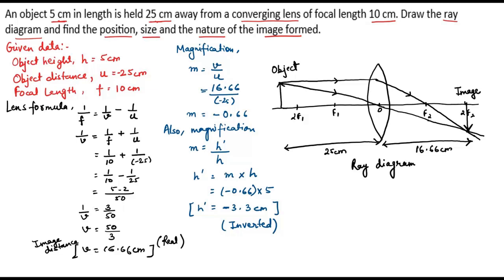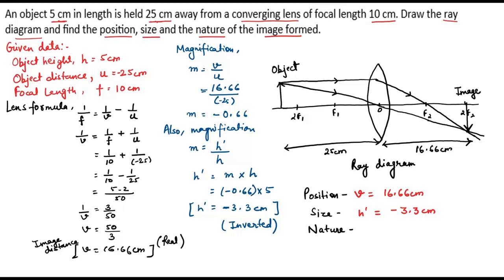This is the ray diagram for this converging lens. From the question we need to find the position, size, and nature of the image formed. The position: image distance v = 16.66 cm. The size: image height h' = −3.3 cm. For the nature: since the image is formed on the right side of the lens, the image is real, and since it is inverted, the nature of the image is real and inverted.